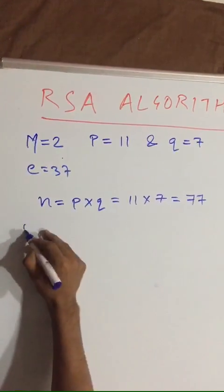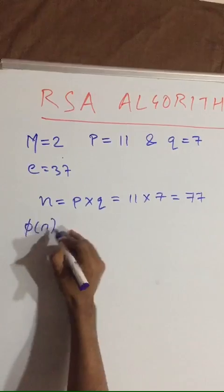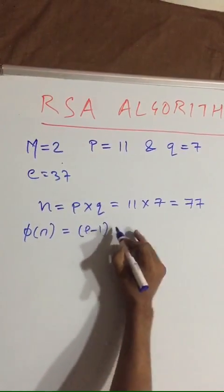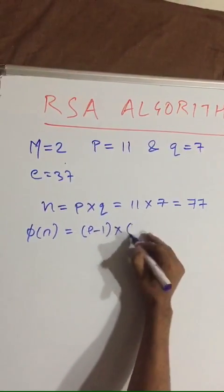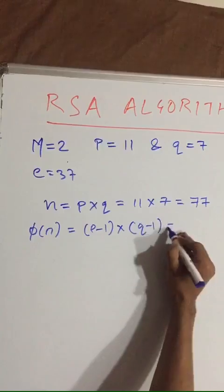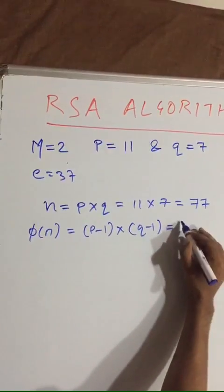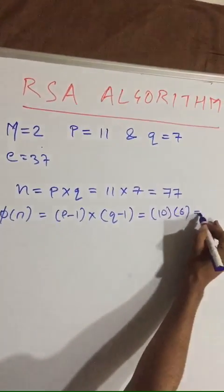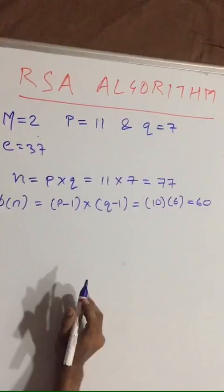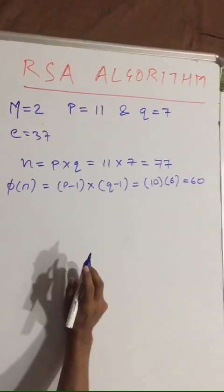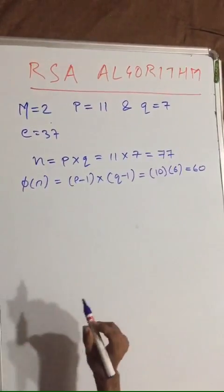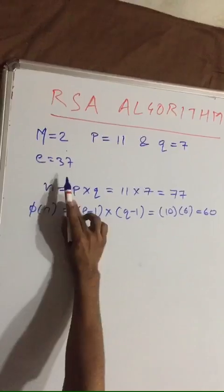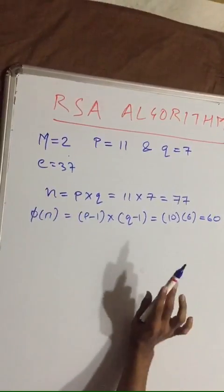Now we have to find phi(n), which equals (P minus 1) times (Q minus 1), equal to 10 times 6, which equals 60. Now, 60 and 37 are relatively prime numbers.